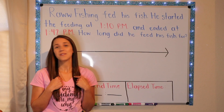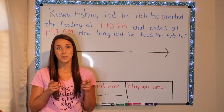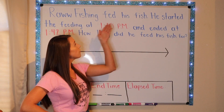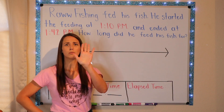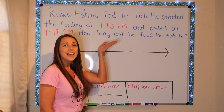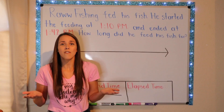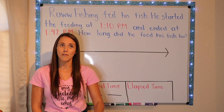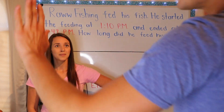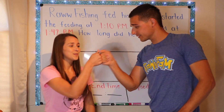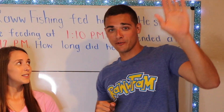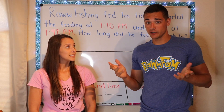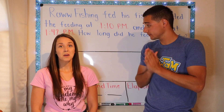Now that we know a little bit about elapsed time, we are going to look at a word problem. My first sentence says, 'Raw Fishing fed his fish.' I can't give you a word problem about Raw Fishing without having him here himself — so my brother Raw Fishing, come on in! Hey, everyone. Do you know what elapsed time is? This is like my worst subject, so I'm ready to learn. Well, let's get ready to teach him!